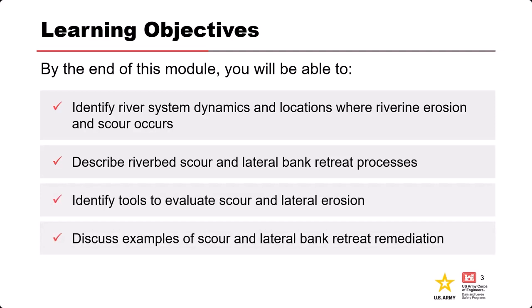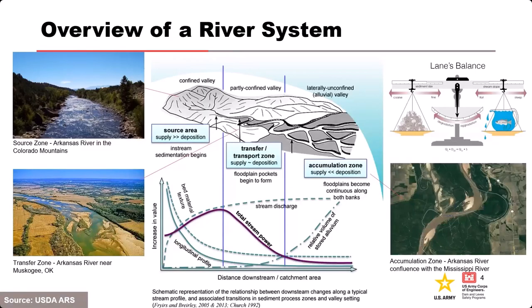Overview of a river system: the river starts up in the mountains in what we call the source area. Using the Arkansas River as an example — if you go up I-70 to Copper Mountain and left to Leadville, you'll see the start of the Arkansas River as a little trickle. In the source zone there's usually not a lot of sediment; mountain streams are usually clear and sediment gets transported away quickly.